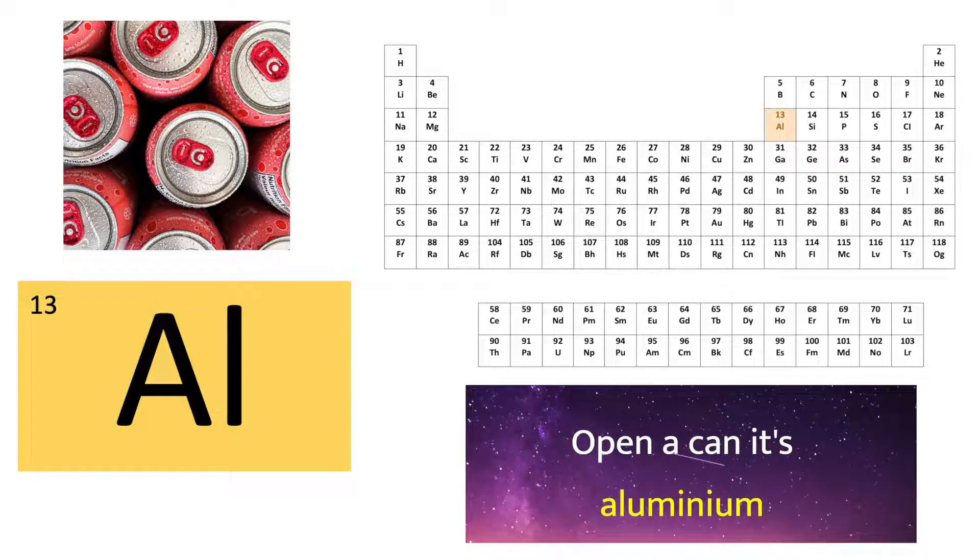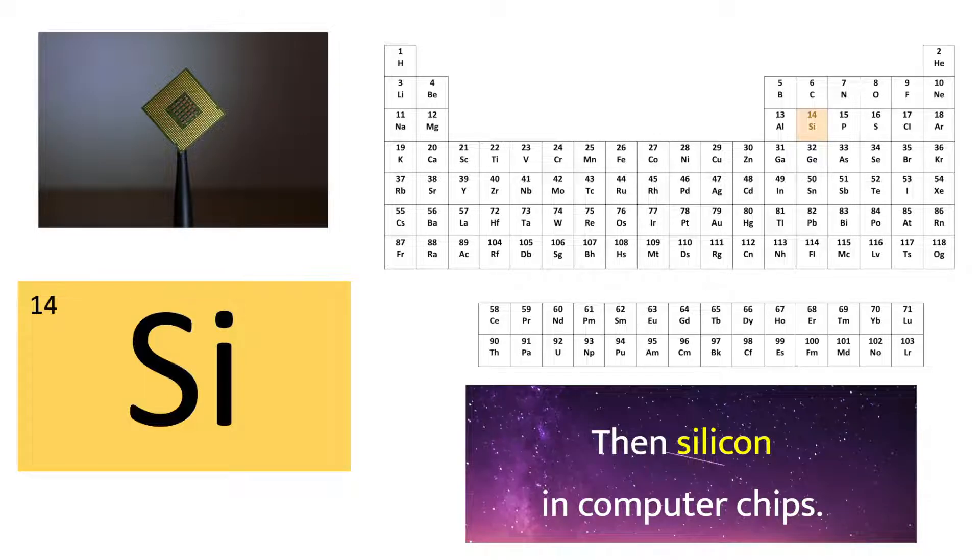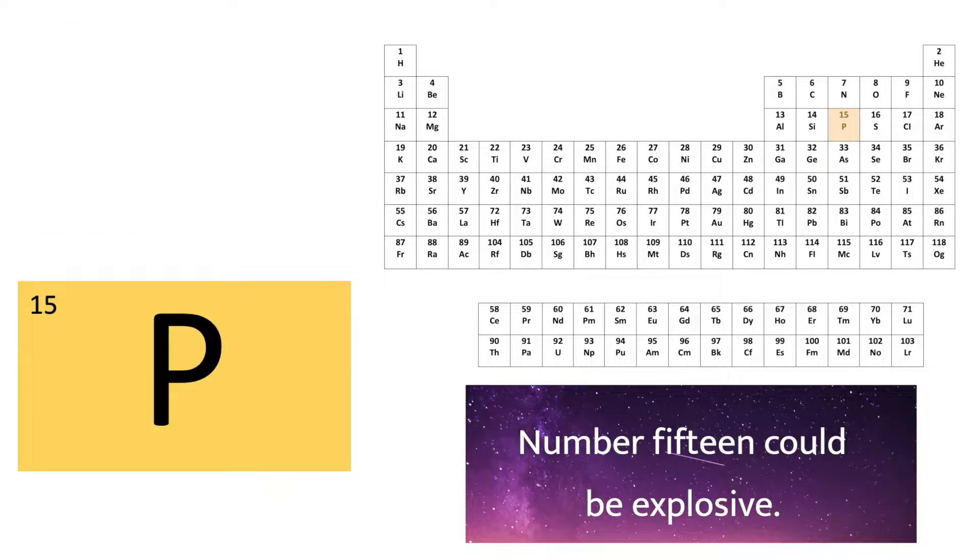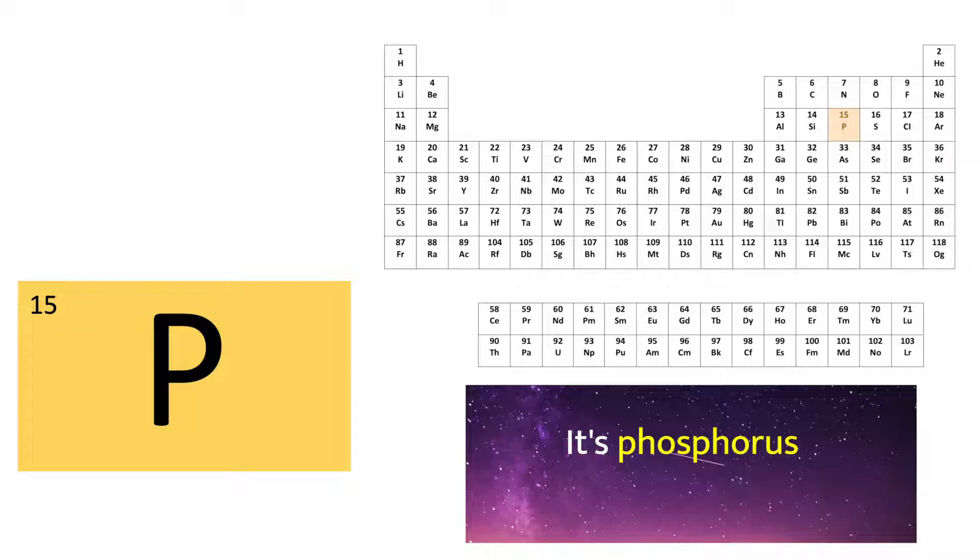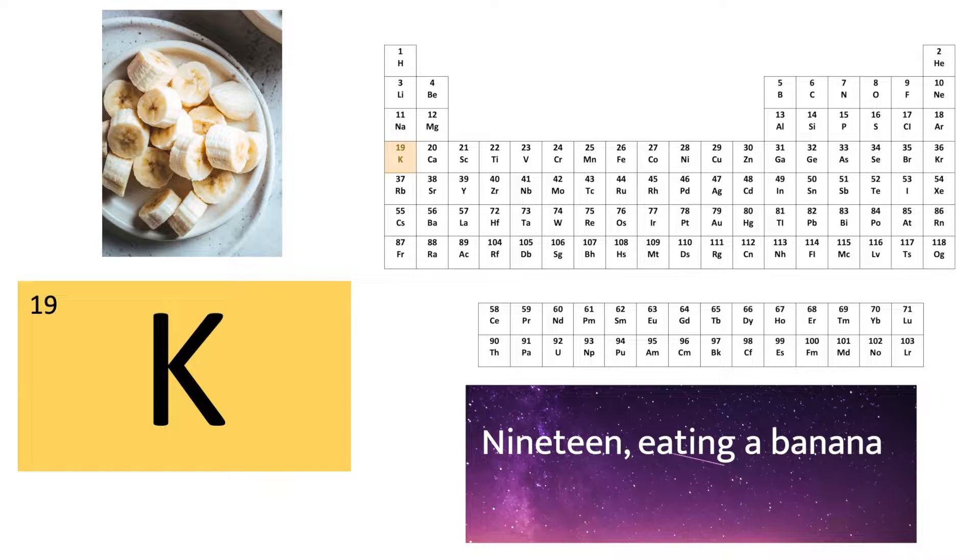Number 13 is unlucky for some. Open a can, it's aluminum. Then silicon in computer chips. Number 15 could be explosive. It's phosphorus. Sulphur, chlorine and argon next.